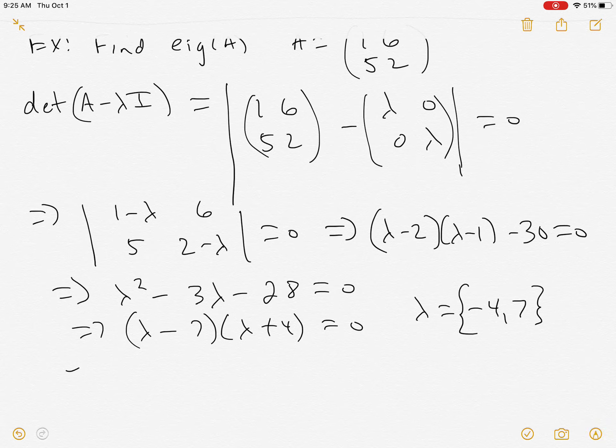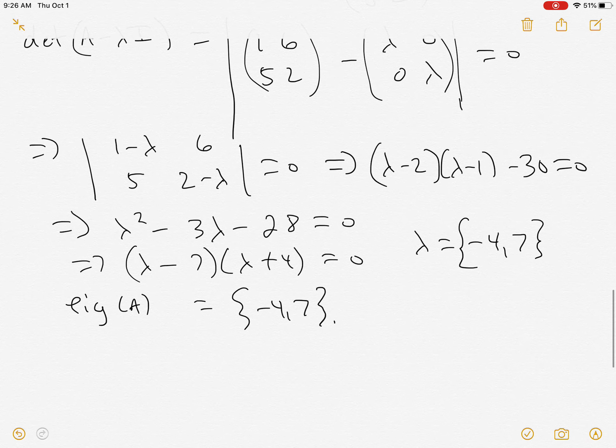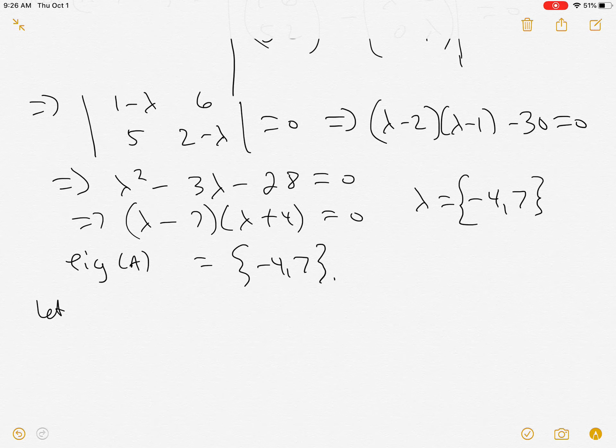Okay, so the eigenvalues of A equal this set {-4, 7}. So to each eigenvalue, there is a set of eigenvectors. The set might only have one thing in it, or it could have multiple, like whatever the multiplicity is. So we take these one at a time. We let lambda equal -4. And again, what we want to solve is (A - λI)x = 0. This is what we're solving.